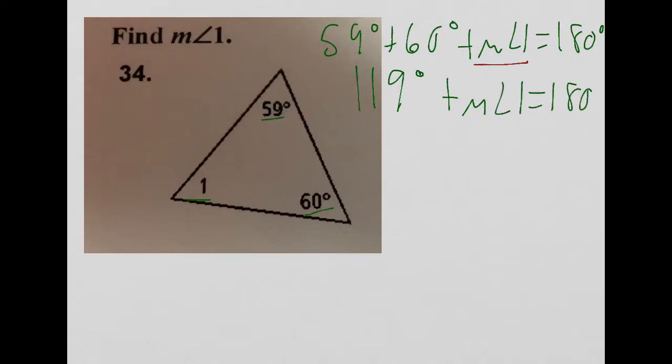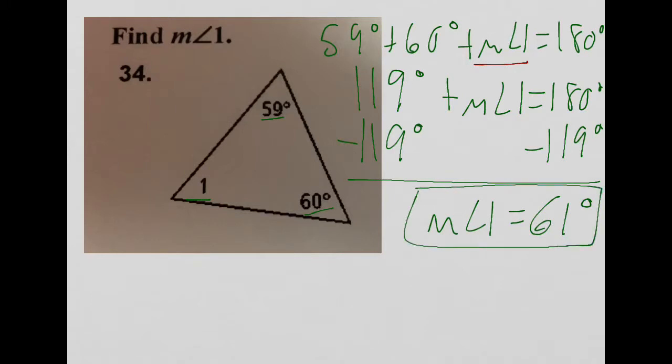Then I just need to subtract 119 degrees from both sides, and I end up with the measure of angle 1 equals 61 degrees. And there's my answer.